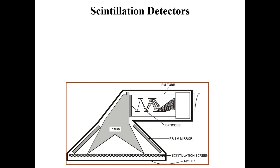As you can see in the figure, the scintillation detector has different parts. The main part consists of a tube which contains the element we call a dynode, then it has a prism as shown in the figure, and at the bottom — as indicated by the cursor — we have the scintillation screen.